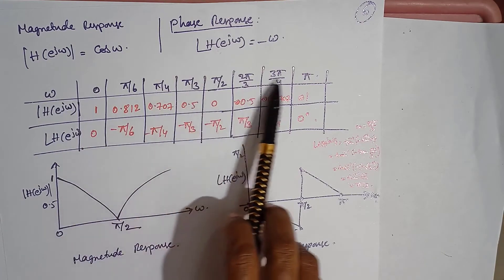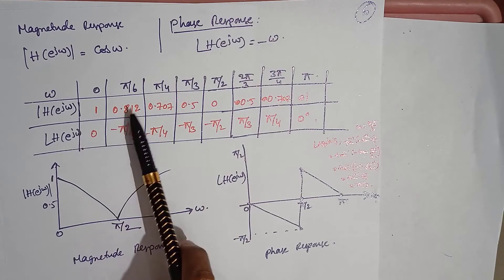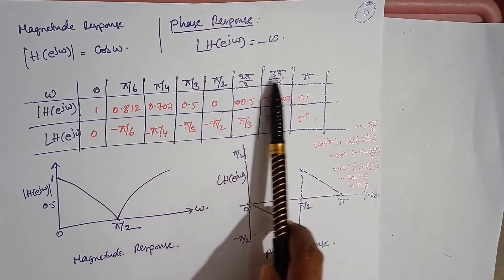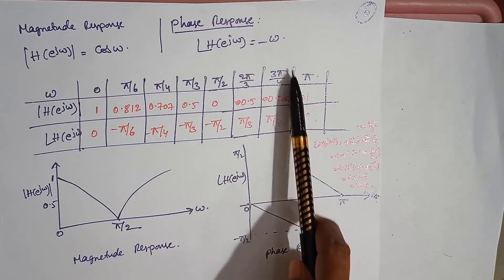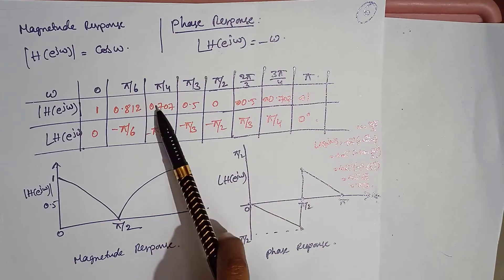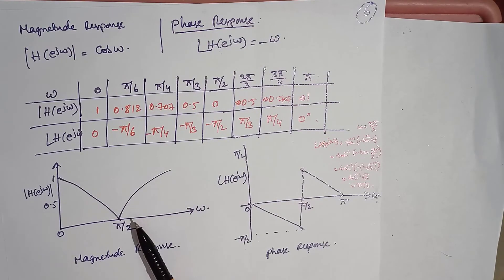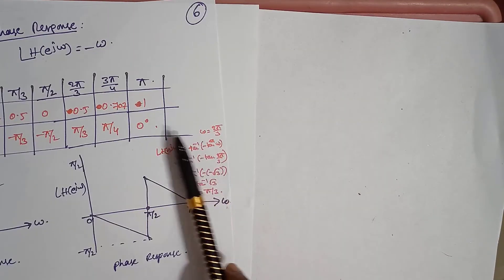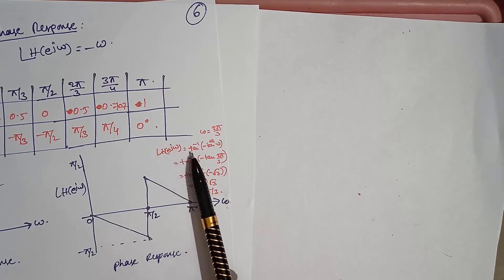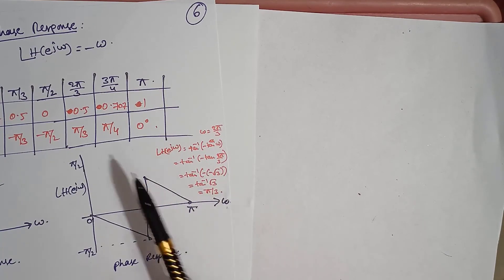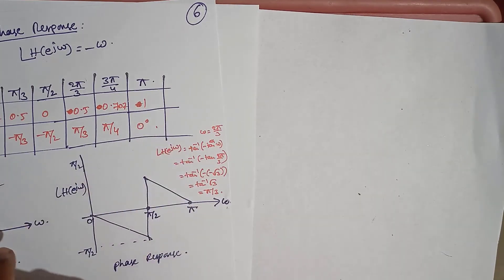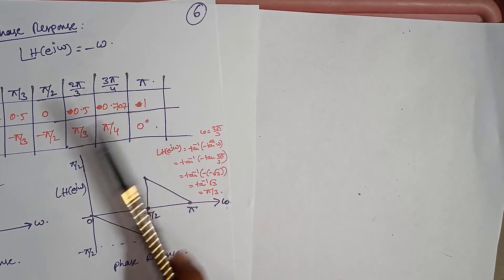Let us see how the plot will look. Take omega values from 0 to pi. Substituting different values of omega, we get the magnitude response values and phase values. From this table we can plot the magnitude response and phase response. For example, if omega equals 2 pi by 3, the phase angle is tan inverse of minus tan omega, giving tan inverse of tan (2 pi by 3) which equals root 3, and tan inverse of root 3 equals pi by 3. Likewise, we get positive values from one part and negative values from another, but because of the modulus we get positive values. Thank you, we will meet in the next video.